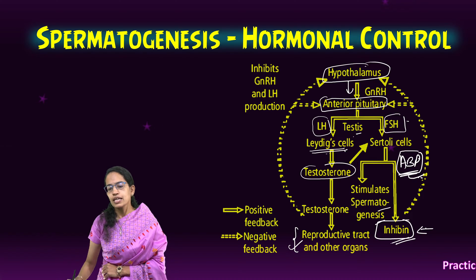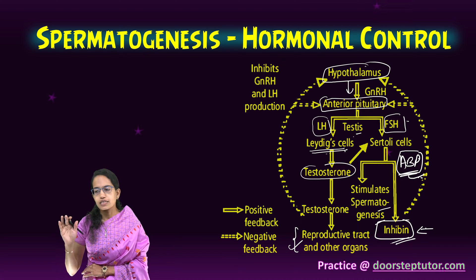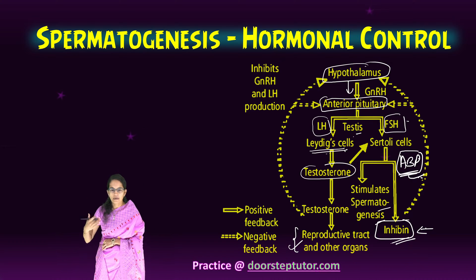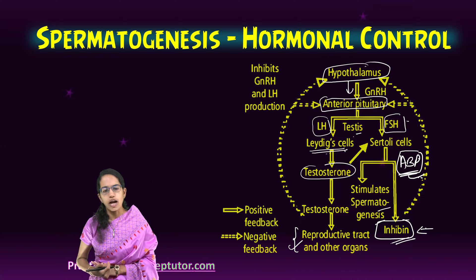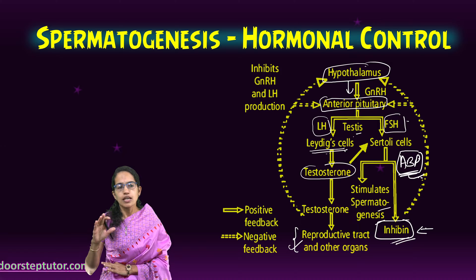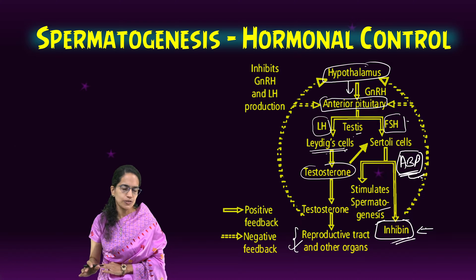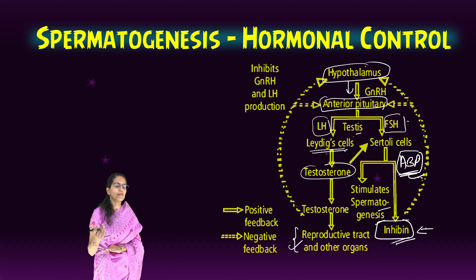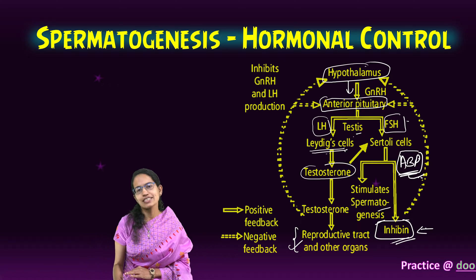What is the role of inhibin? As the name suggests, it suppresses — it inhibits FSH synthesis. Therefore, inhibin is important and provides a negative feedback to the hypothalamus. Those are the various important processes involved in spermatogenesis. I hope this lecture was useful and we'll be covering oogenesis in our next lecture. Stay tuned.